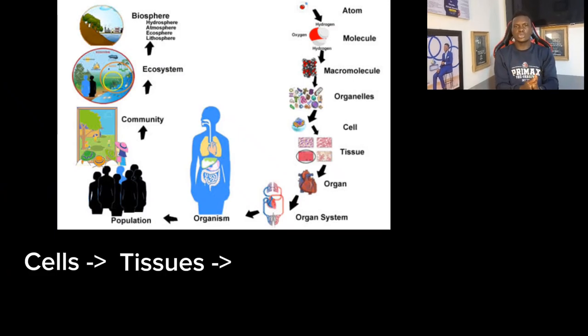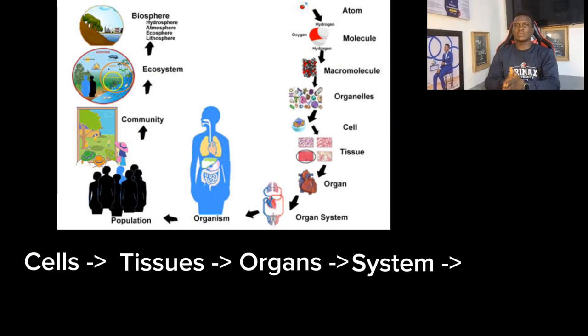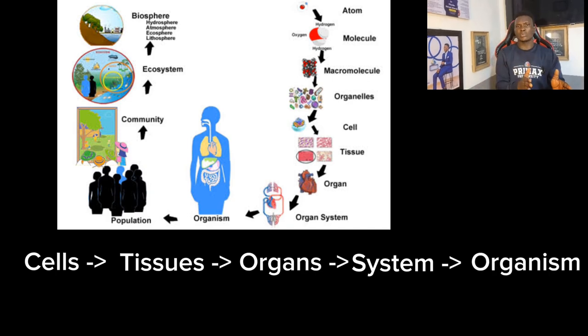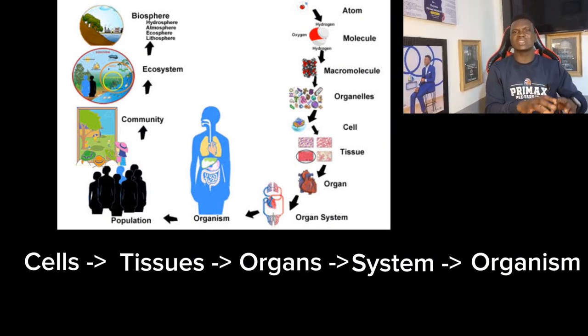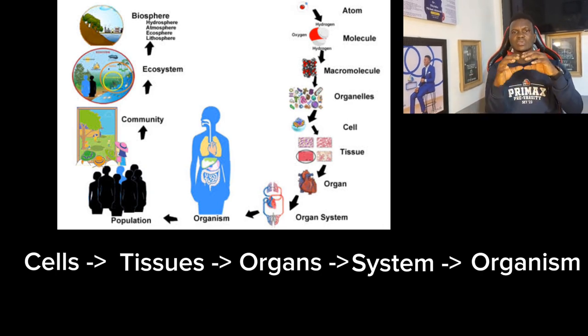How cells make you who you are is explained by the organization of life. Some organisms exist at the cellular level, but life in complex organisms is specialized and organized. Several cells come together to form tissues. Tissues come together to form organs. Organs come together to form systems. Tissues are a collection of similar cells performing similar functions. Organs are collections of similar tissues performing similar functions. Systems are a collection of similar organs performing similar functions.